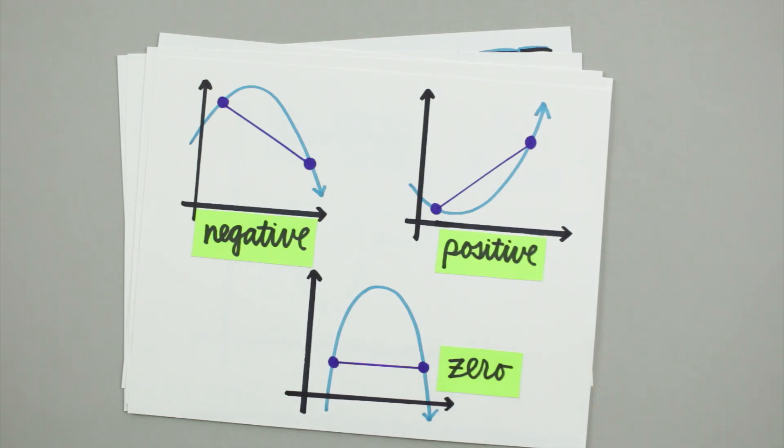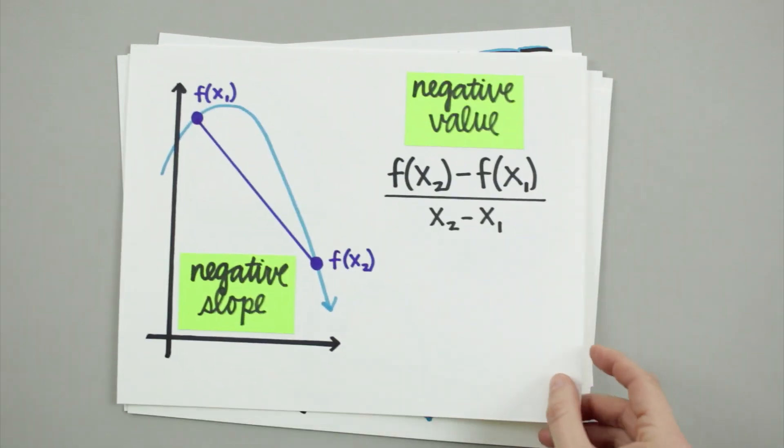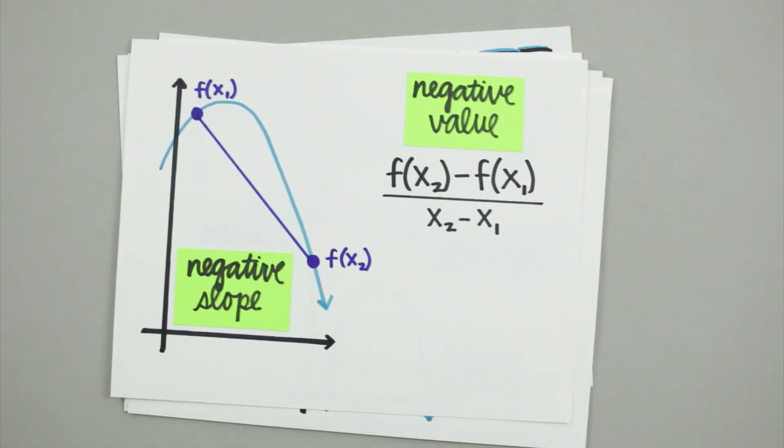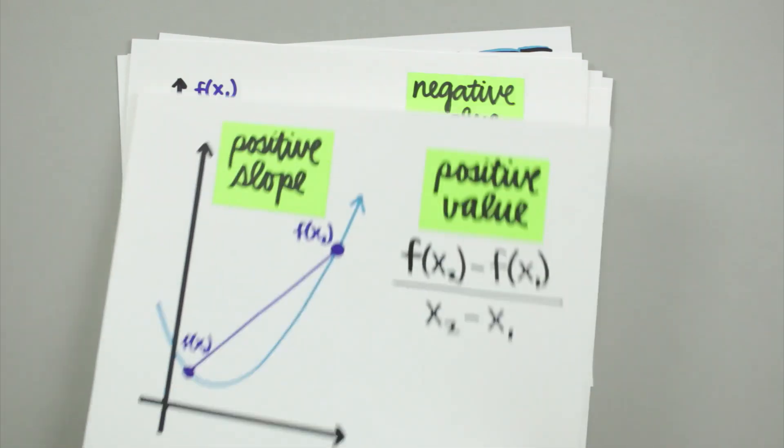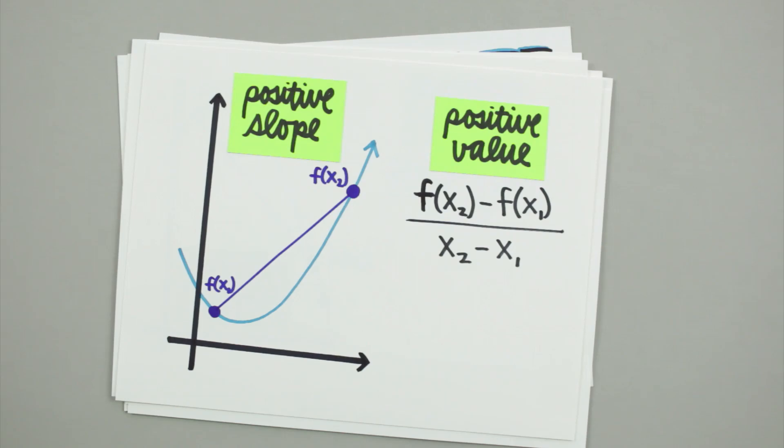The average rate of change of a function will be negative when f(x₂) is less than f(x₁), which makes sense both when we draw the secant line on the graph and when we realize what subtracting f(x₁) from f(x₂) will do to our equation. Likewise, the average rate of change will be positive whenever f(x₂) is greater than f(x₁).